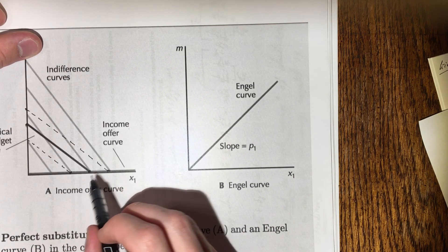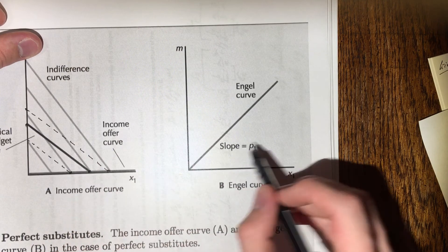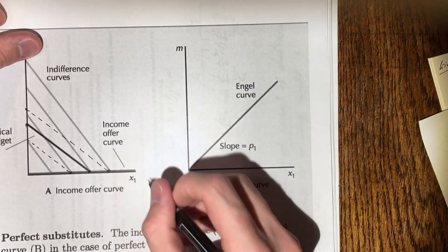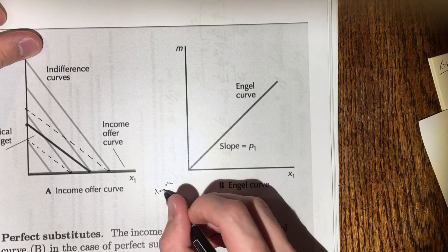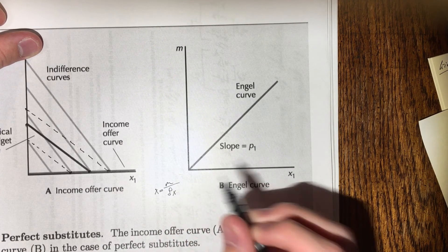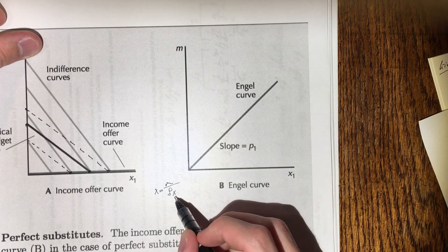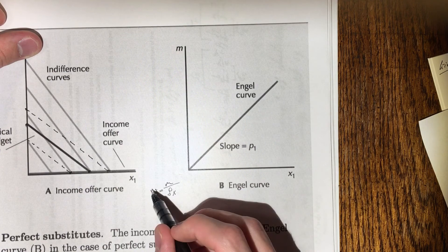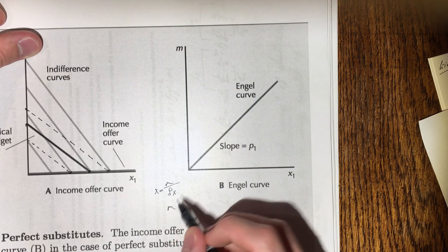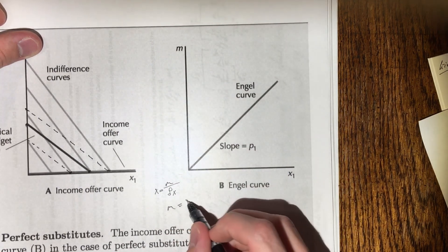Well, we can recognize that the amount of good x that we buy is simply our income divided by the price of x, which means that the slope here, so amount of x that we can buy, is equal to income over the price of x, right?